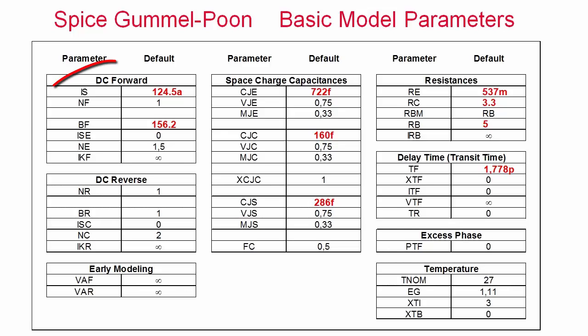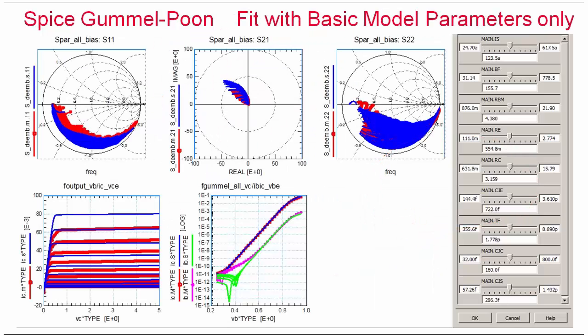These nine parameters are the DC parameters saturation current IS and the current amplification BF, the external resistors at the base, the emitter and the collector, the zero bias capacitance values and the transit time TF. And their fitting is, as you can see here, already quite acceptable.